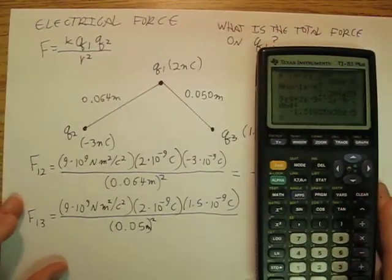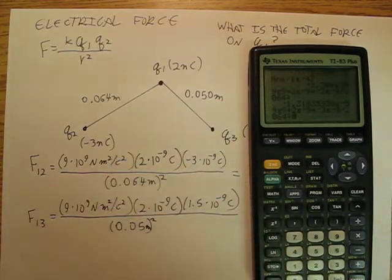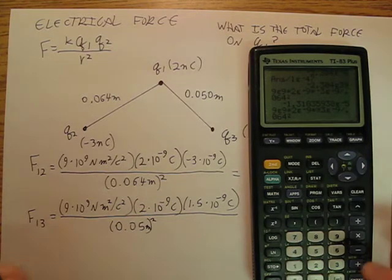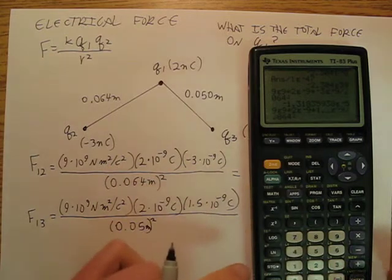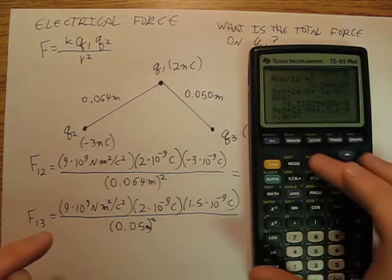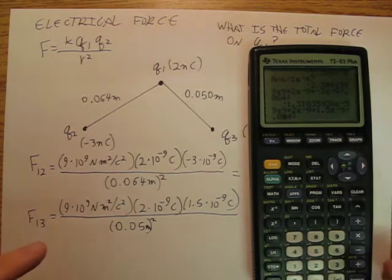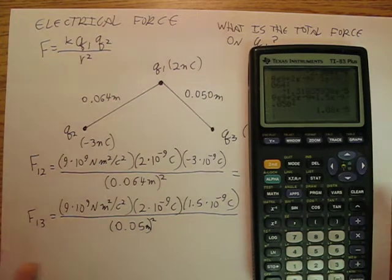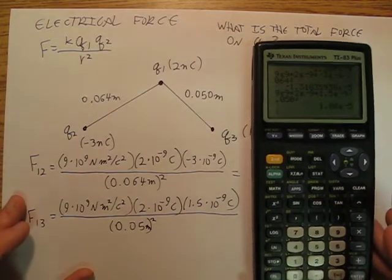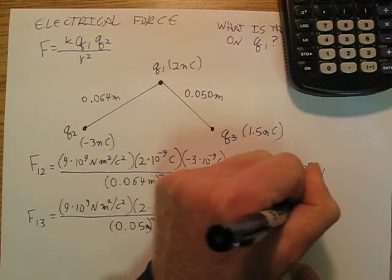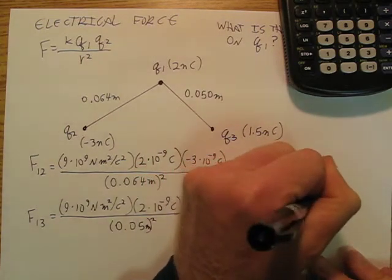So I've got a lot of this on my calculator already. I'm going to just back up. And instead of negative 3, I'm going to change that to 1.5. And then instead of 0.064, I'm going to change that to 0.050. And I get 1.08 times 10 to the negative 5th newtons.